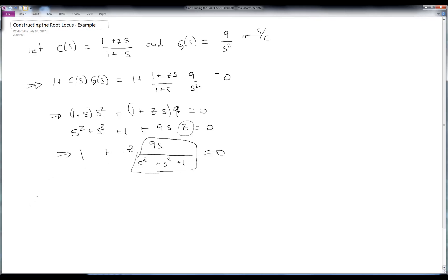First we know from rule number 1 that we start at the poles and end at the zeros. In this case, using MATLAB, I can find that the poles are equal to minus 2.5, and these are all approximate numbers, and 0.7 plus or minus j times 1.76. The zeros are just 0, and then there's actually 2 at infinity. So I'm going to go from some poles here to all three of these zeros.